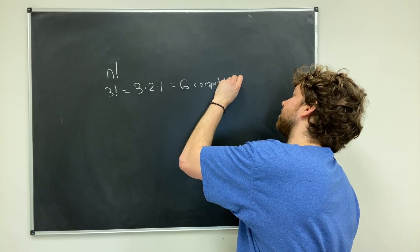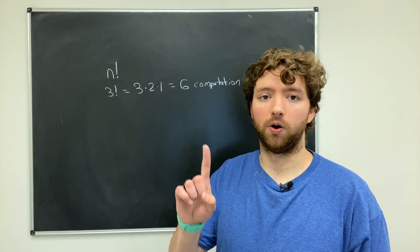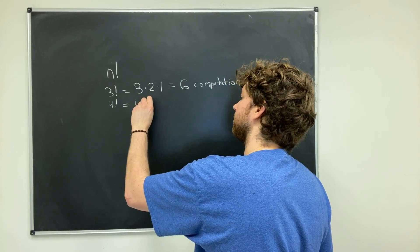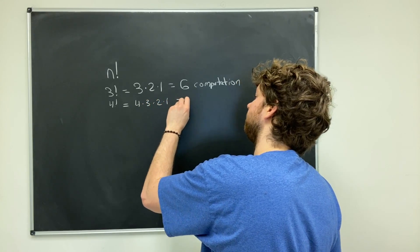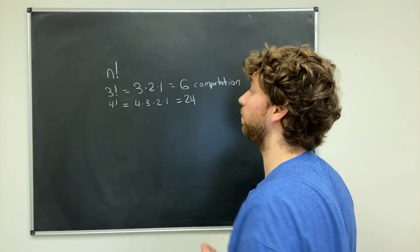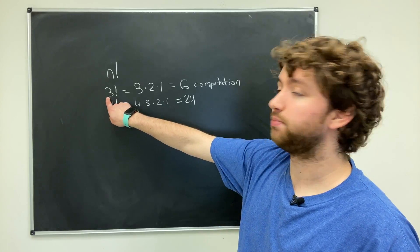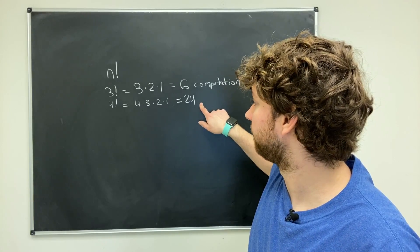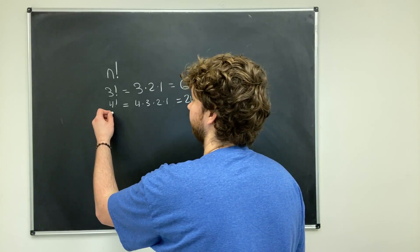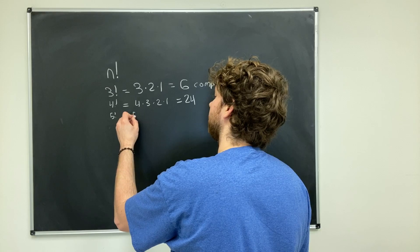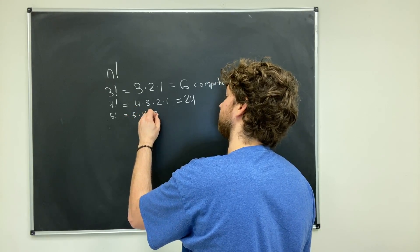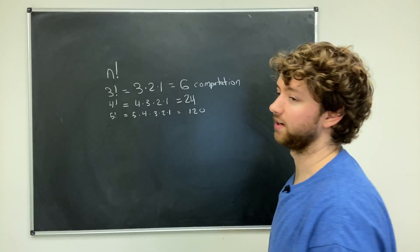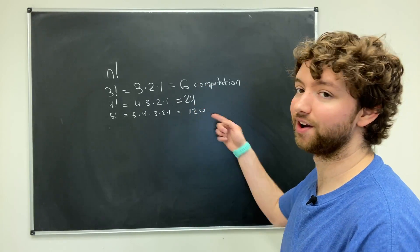Now what if we just increase the input size by one and we say four factorial? Well this is going to be four times three times two times one, which is 24. So by increasing the input size, just one, the number of computations goes up a lot. Let's try one more time. Let's go with five factorial. This is going to be five times four times three times two times one, which is actually 120. So you can see this is going up and up and up.